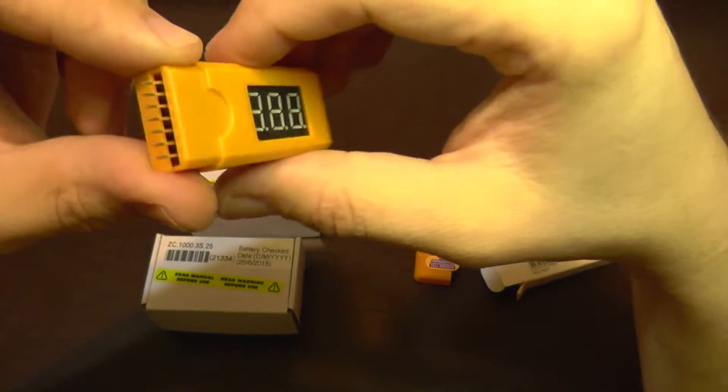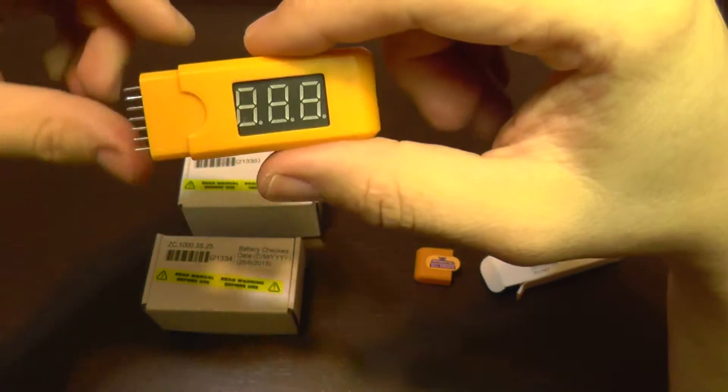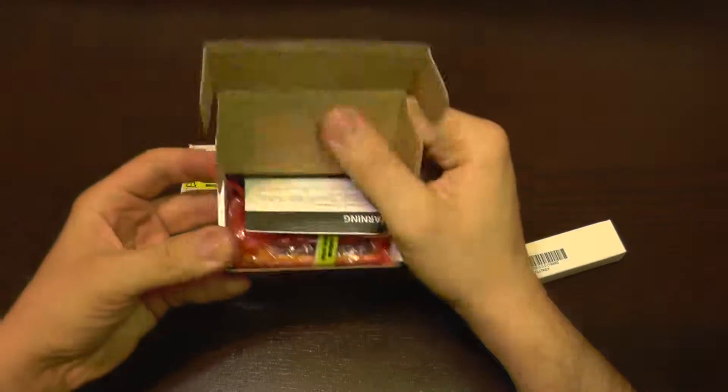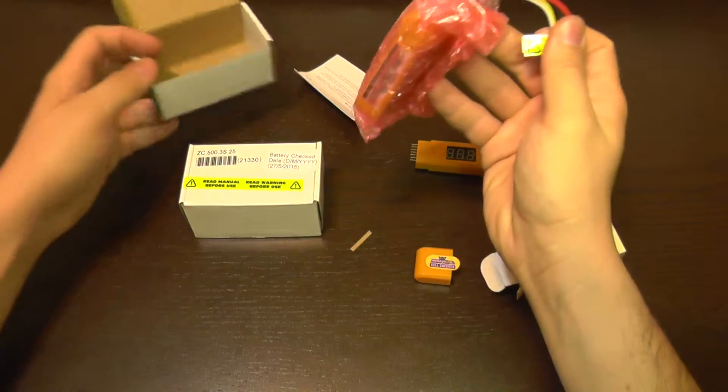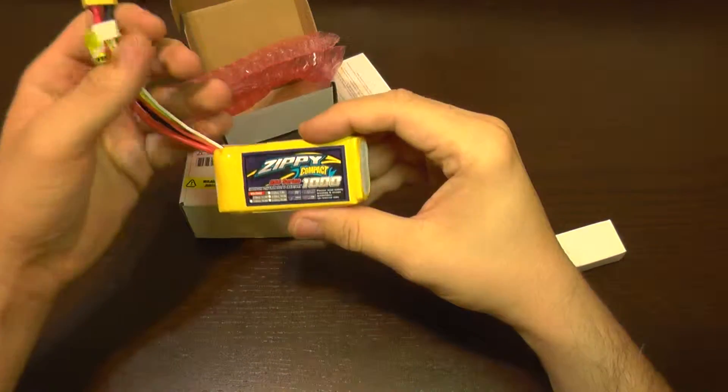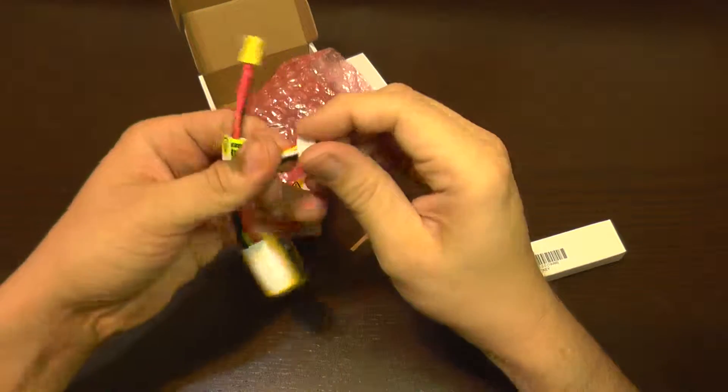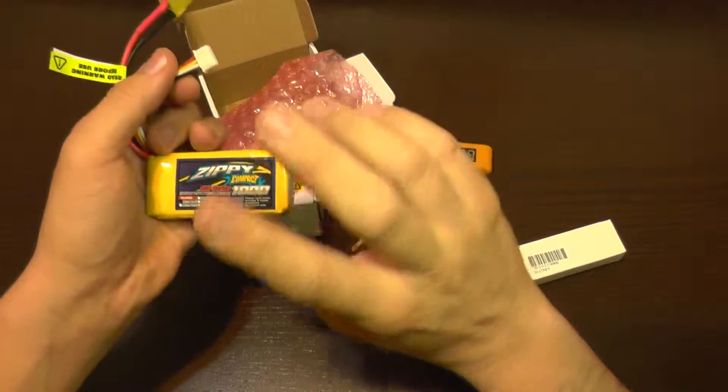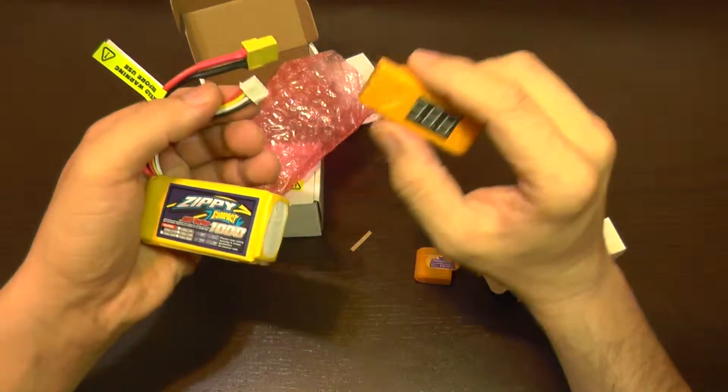I'm going to show you how it works. It's very simple. These are new batteries from HobbyKing, it's a Zippy Compact battery. So to check its individual cells and its total voltage, it's very easy to use this.